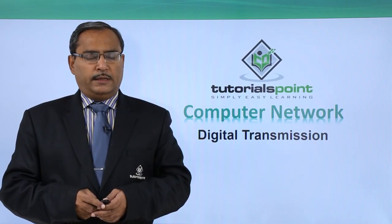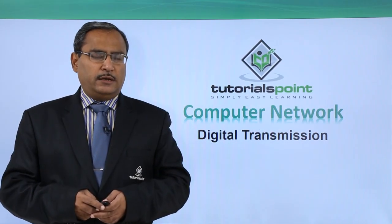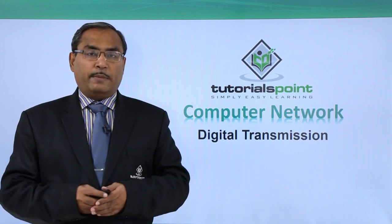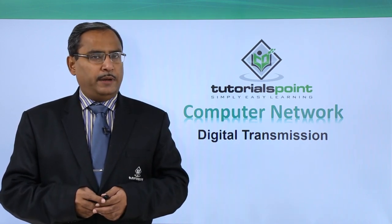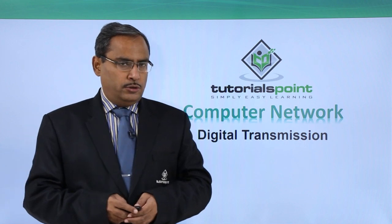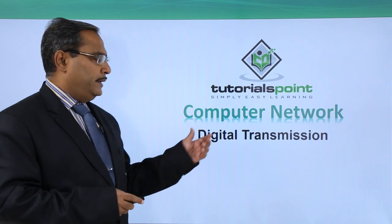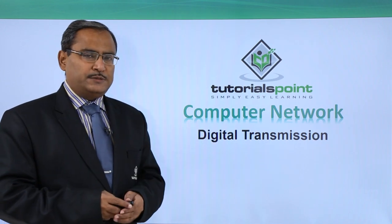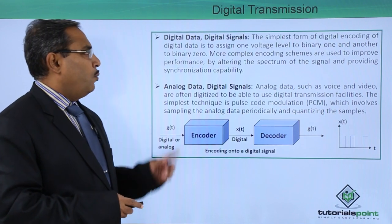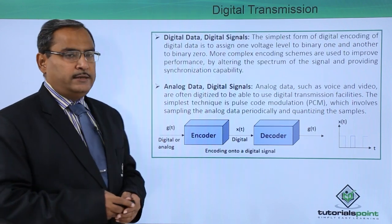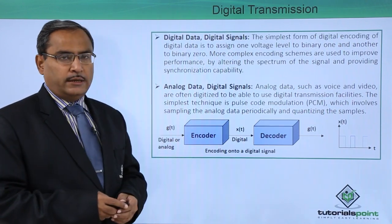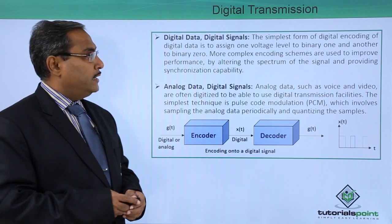Digital transmission. In case of digital transmission, our data might be in the form of digital or in the form of analog. That is why in case of digital transmission, we can have two different categories: one is the digital data digital signal, and another one is the analog data digital signal.